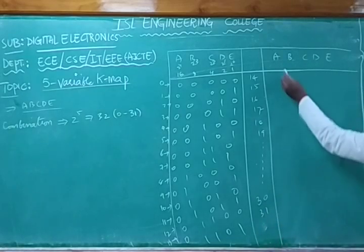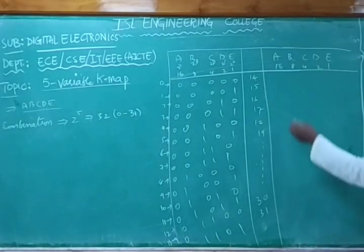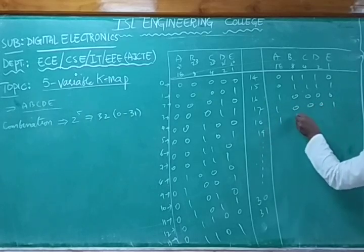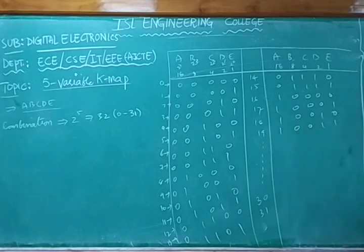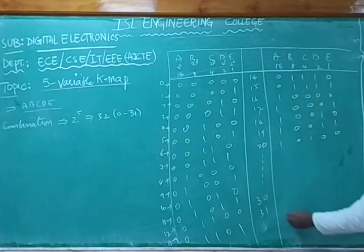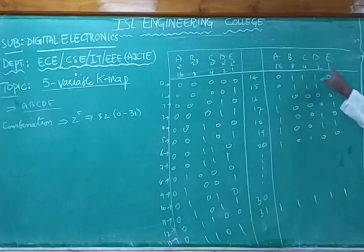Continuing the truth table: 14 is 01110, 15 is all ones (01111), 16 is 10000, 17 is 10001, 18 is 10010, 19 is 10011, 20 is 10100 (16+4), and so on through 24, 28, 30, and 31 which is 11111 — all ones.